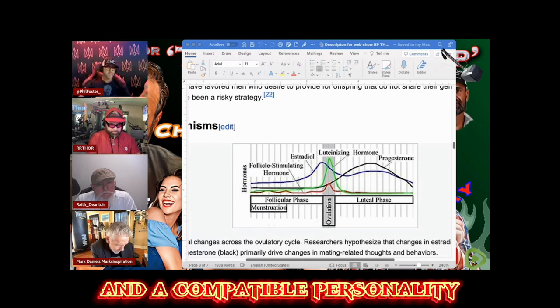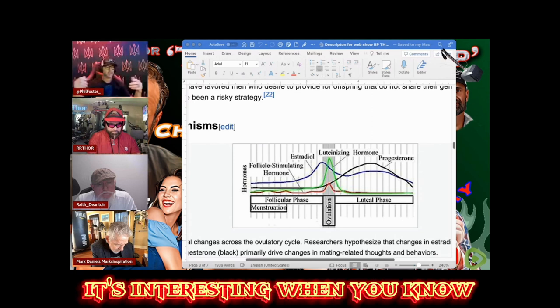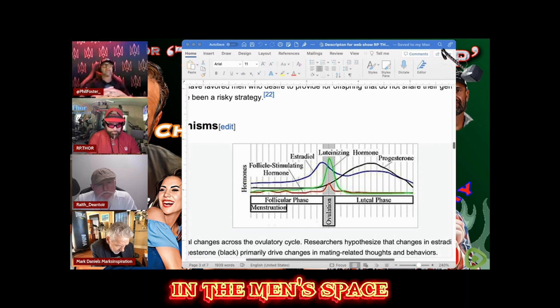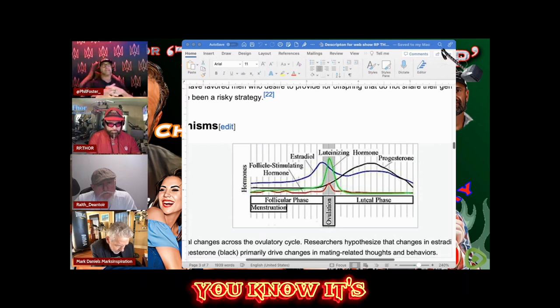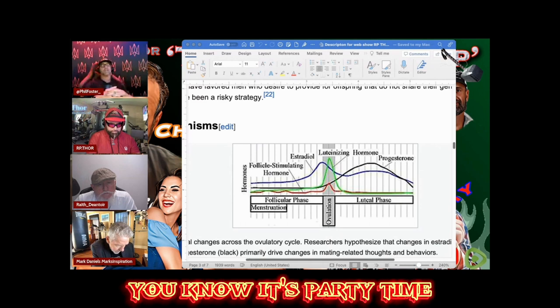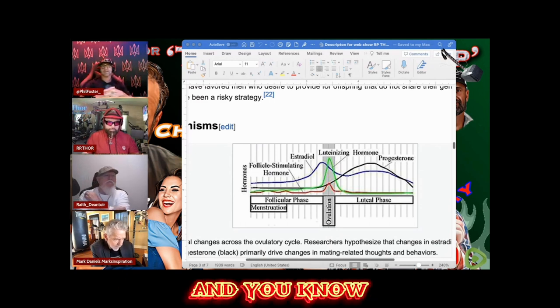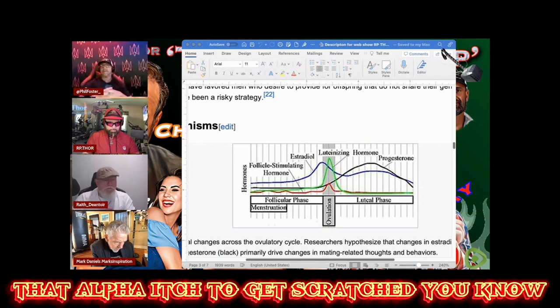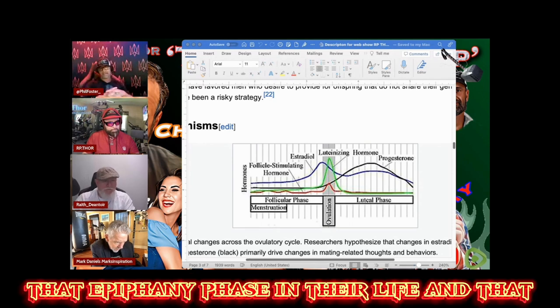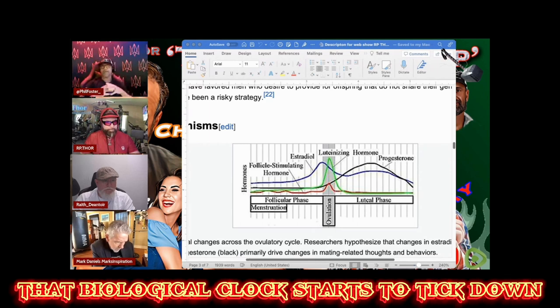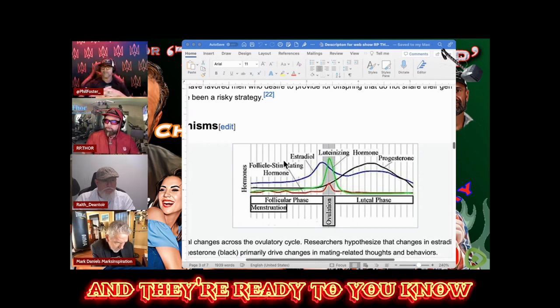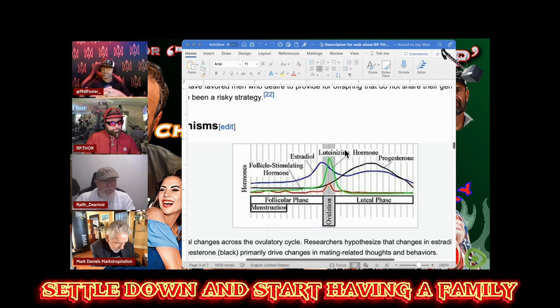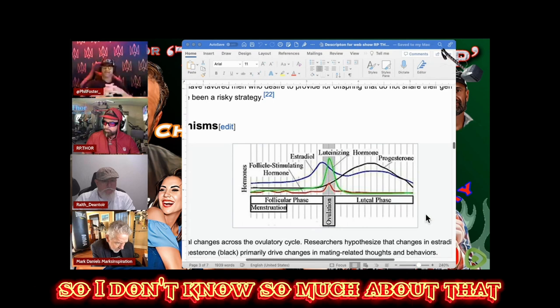An ideal mate could have many qualities: resources to care for offspring, physical ability and social status to protect a mate and offspring, and compatible personality for long-term bonding. In the red pill community, younger girls are out here looking for that alpha itch to get scratched, and as they hit that epiphany phase, their biological clock starts to tick down and they're ready to settle down.